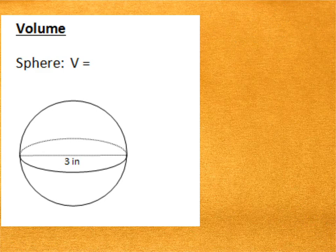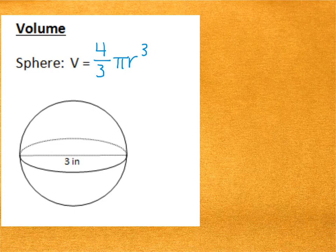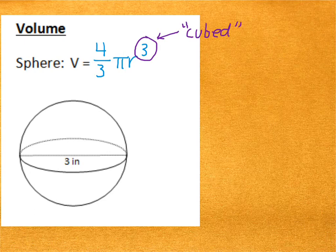The formula for the volume of a sphere is 4 thirds times pi r cubed. That 3 as an exponent is, you read it as cubed. The power of 2 is squared. The power of 3 is cubed.